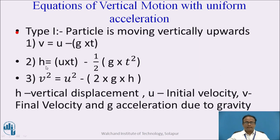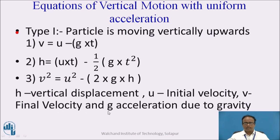The second expression to find the height h is: h = ut − ½gt². Similarly, the third expression is: v² = u² − 2gh, where h is the vertical displacement or height, u is the initial velocity, v is the final velocity, and g is the acceleration due to gravity.